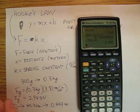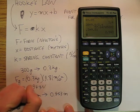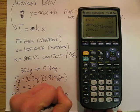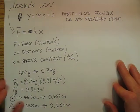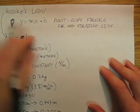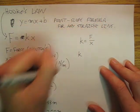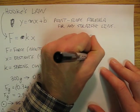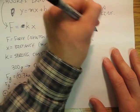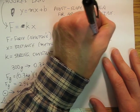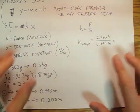So if I plug those into my equation, k equals F divided by x. So k for the loose spring is going to be 2.943 newtons divided by 0.453 meters.